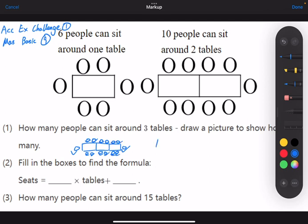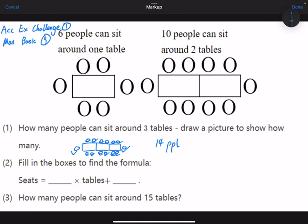So 14 people can sit around three tables. And then question number two: fill in the boxes to find the formula. So the number of seats equals what times the number of tables plus what?